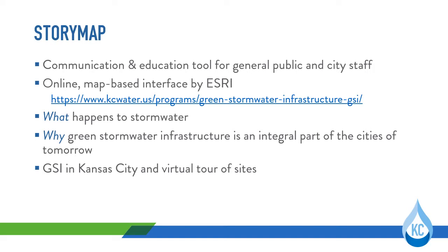The StoryMap begins with an overview of what happens to stormwater as it falls on our city and travels through the connected infrastructure of roads, inlets, and pipes. Green stormwater infrastructure is defined, and examples of its potential impact on stormwater reduction are visually demonstrated.